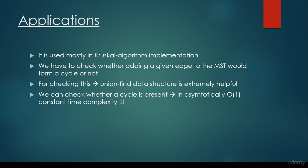What about the applications of the disjoint set? It is used mostly in Kruskal algorithm implementation. We have to check whether adding a given edge to the minimum spanning tree would form a cycle or not — this is how Kruskal algorithm works. The union-find data structure is extremely helpful because we can check whether a cycle is present or not in the graph in asymptotically O(1) constant time complexity. Because of path compression, these nodes and vertices will be connected to the representative directly, which is why asymptotically it takes O(1) time complexity to check for a cycle in Kruskal's algorithm.